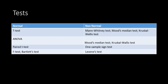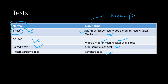Here are the non-parametric tests you can use. In the normal case you use the t-test. If the data is not normal and you still use linear regression, instead of the t-test use the Mann-Whitney test, Mood's median test, or the Kruskal-Wallis test. For ANOVA, use Mood's median test or the Kruskal-Wallis test. For the paired test use the one-sample sign test. For the F-test use Levene's test. These non-parametric alternatives are more appropriate when normality does not hold.